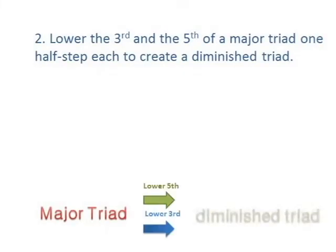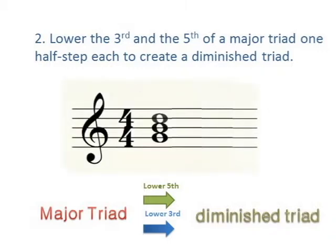If you want to make diminished triads, start with a major triad and lower the third and the fifth by one half step each. G, B, D is a major triad. Lowering the third and the fifth, we find G, B flat, D flat is a diminished triad.